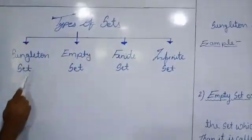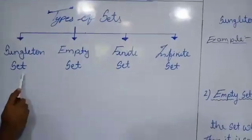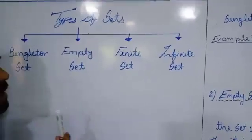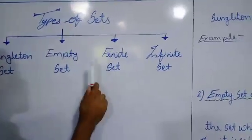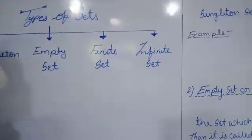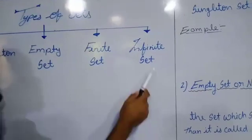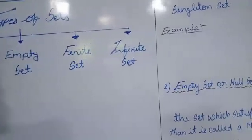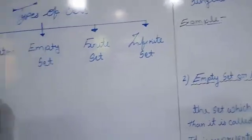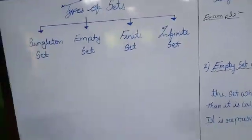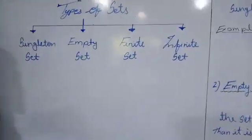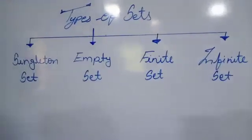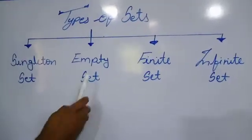The first type of set is the singleton set. The second one is the empty set. The third one is the finite set. The fourth one is the infinite set. What is the singleton set? A singleton set means a set in which we have a single element.